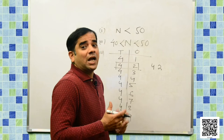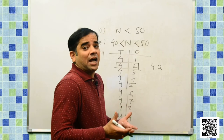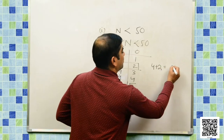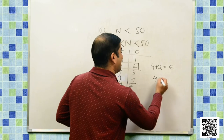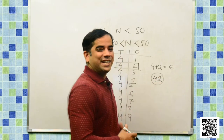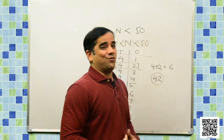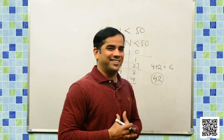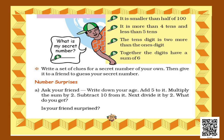The last clue says together the digits have a sum of 6. Exactly — 4 plus 2 equals 6. The secret number is 42. We have revealed the secrets! Now students, you can write a set of clues for a secret number of your own, then give it to a friend to guess your secret number. Have fun with math!